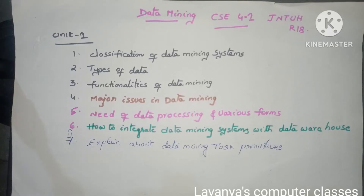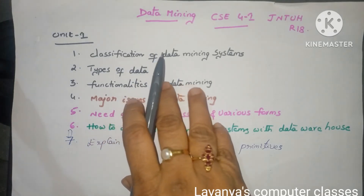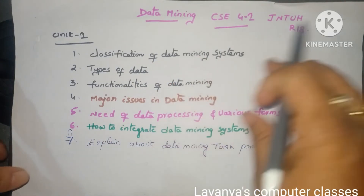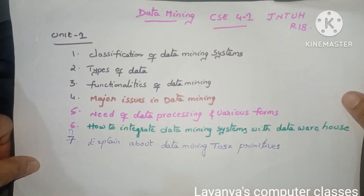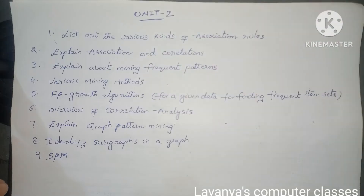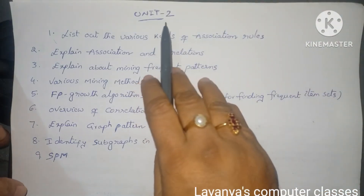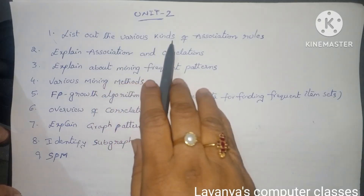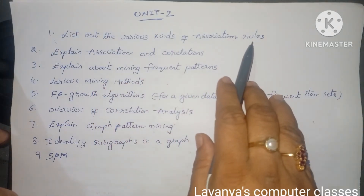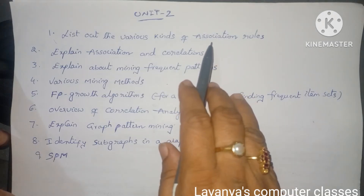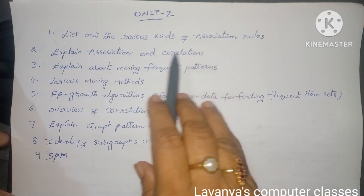If you read all these questions it is very easy to attempt both internal as well as short answer questions and long answer questions. Take a note and read all the questions without leaving any question. Moving to unit 2, the important questions are: list out the various kinds of association rules — they ask this in short answer questions also, and depending upon the marks we have to elaborate the answer.